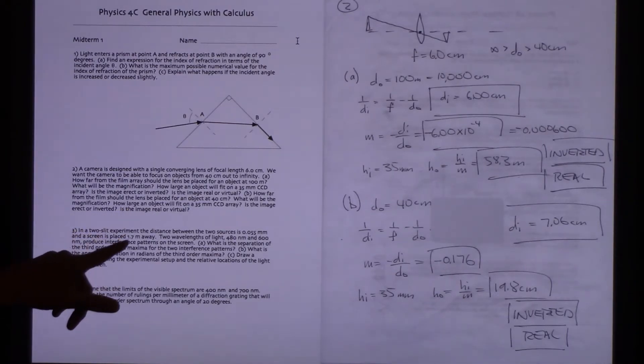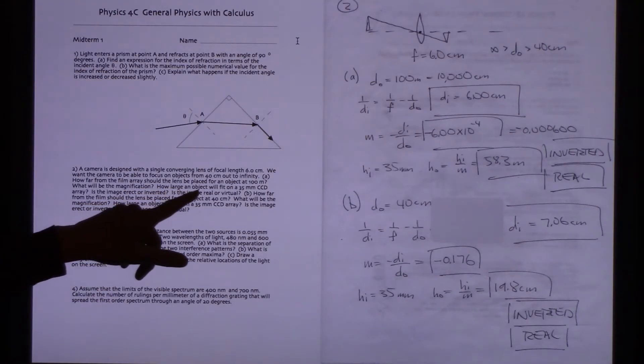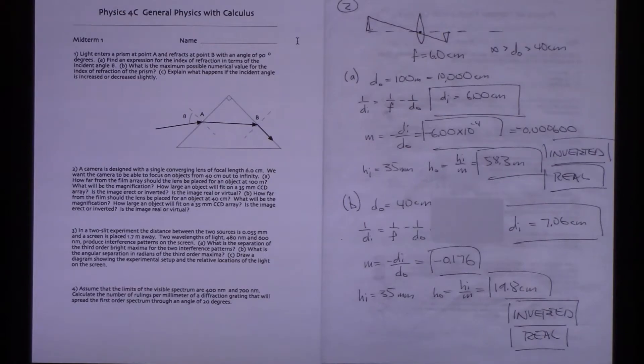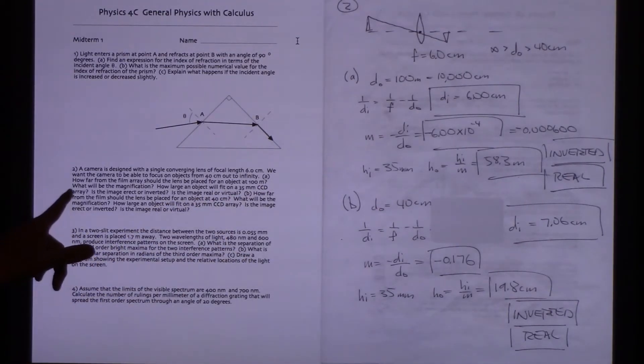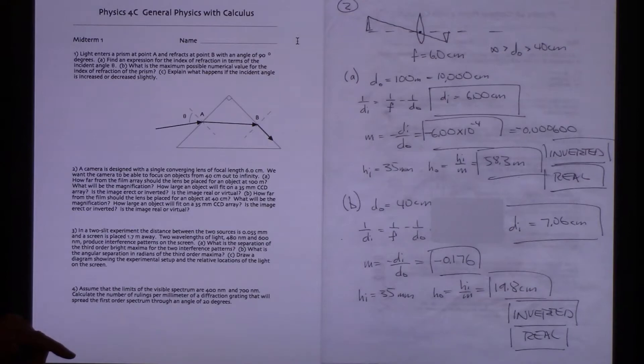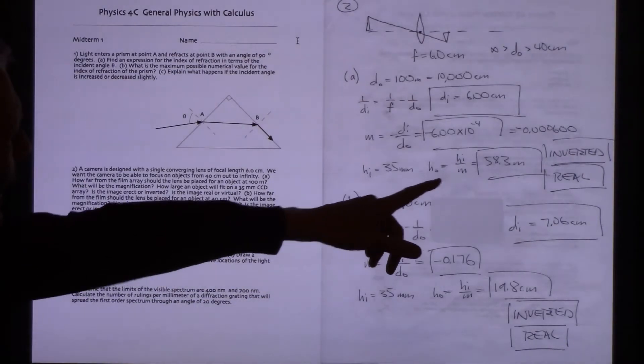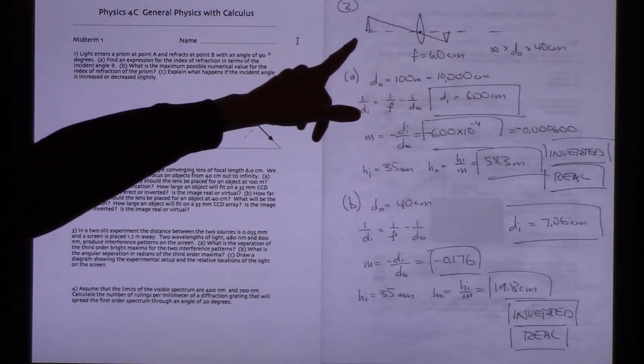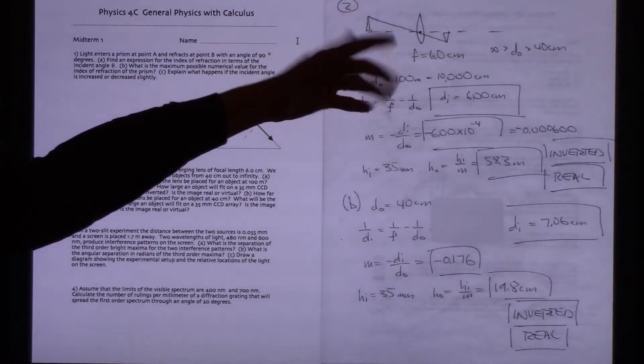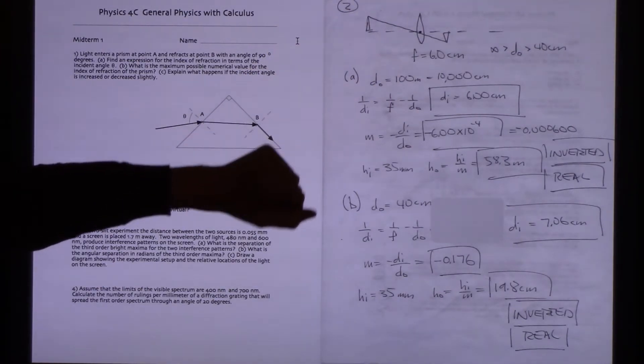For this example, at 100 meters, what will be the magnification? How large an object will fit onto a 35 millimeter CCD array? So that's the sensors, the charged coupled devices for the camera. Is the image erect, which is right side up, or inverted, which is upside down? Is the image real or virtual?